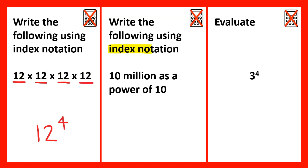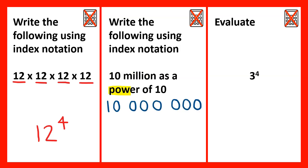We're writing the following using index notation again. It might be easier to write down what the number 10 million actually looks like — it'd be 10 followed by 6 zeros. And because we're doing it as a power of 10, 10 would be the base number.